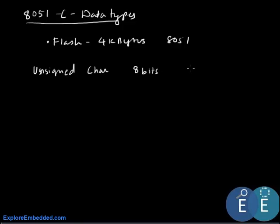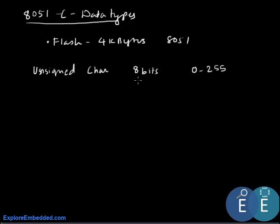The basic data type we use is unsigned char as the default for declaring variables and accessing the registers of the controller. We do this because unsigned char is 8 bits in length, with a range of 0 to 255. The 8051 is an 8-bit microcontroller which handles data in chunks of 8 bits, so if we use data types like int, long int, or float, the controller would have to split the longer data types into 8 bits, consuming a lot of memory.